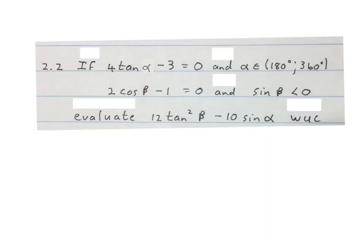The next question is a mouthful. They say if 4 tan alpha minus 3 equals 0 and that alpha lies between 180 degrees and 360 degrees, then also they tell us 2 cos beta minus 1 equals 0 and that beta is where sin beta is smaller than 0. Evaluate or calculate 12 tan squared beta minus 10 sin alpha without using a calculator. So we're going to have a diagram for alpha and a separate diagram for beta.